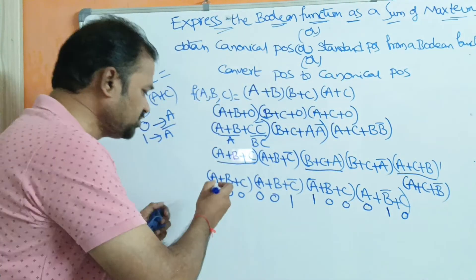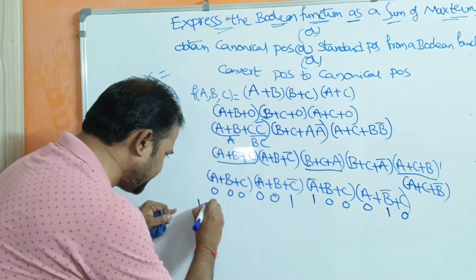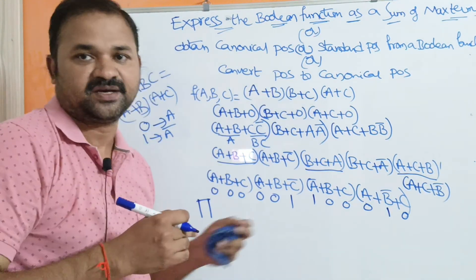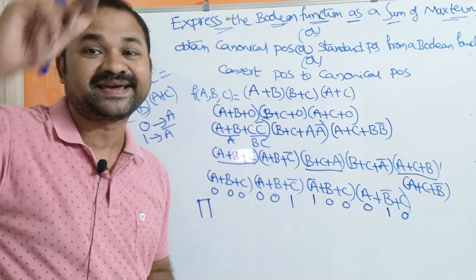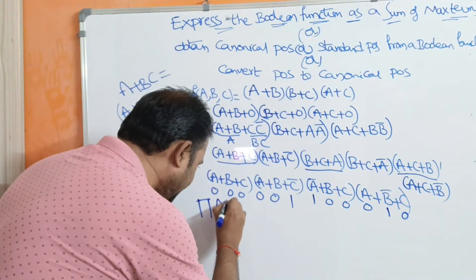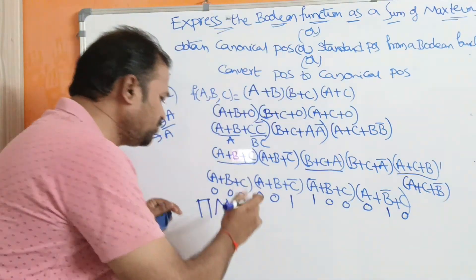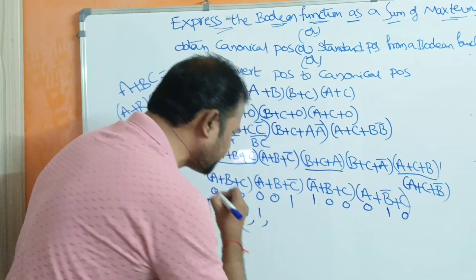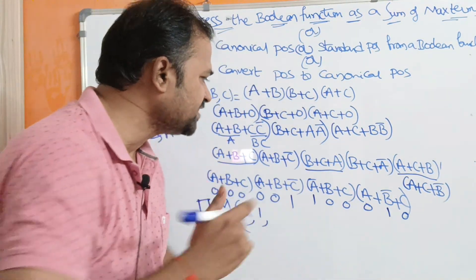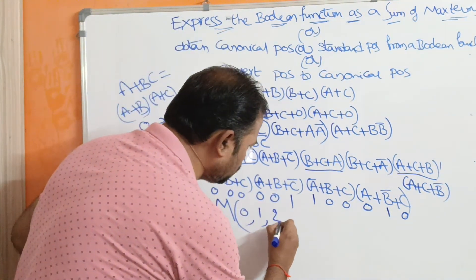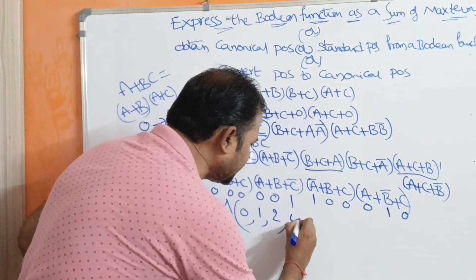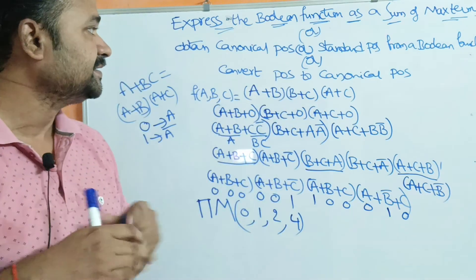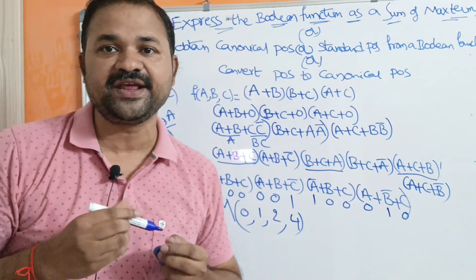We can represent the result in terms of π (product) notation. π means product operation, and we represent max terms with capital M. So F = πM(0, 1, 2, 4), where 0,0,0 = 0 in decimal; 0,0,1 = 1; 0,1,0 = 2; and 1,0,0 = 4 in decimal. This is the standard or canonical POS form.